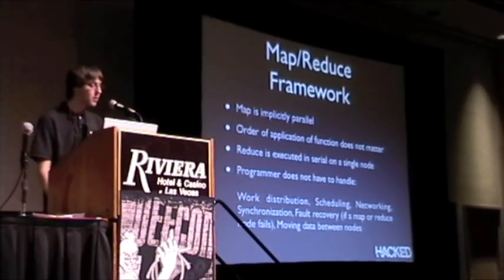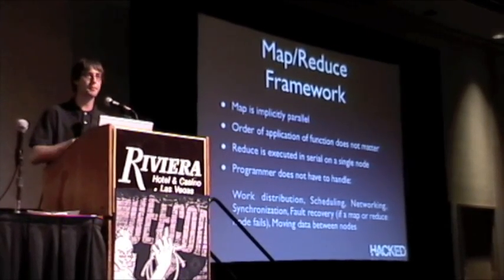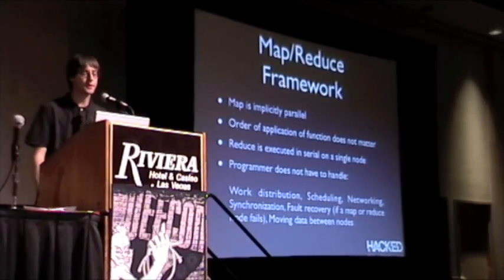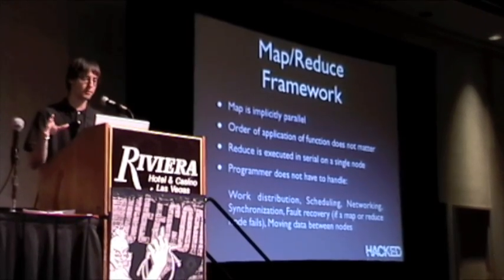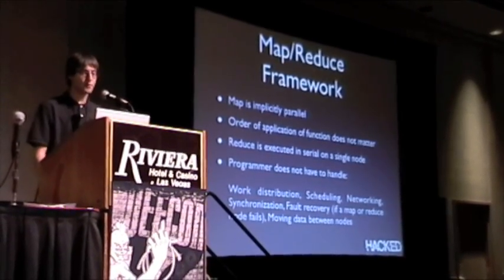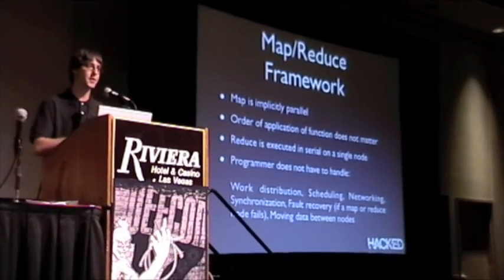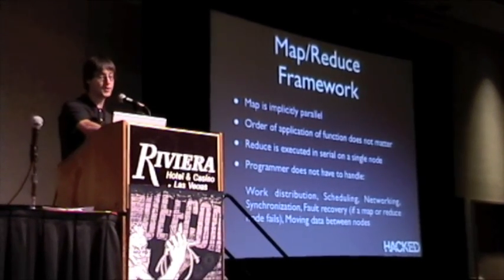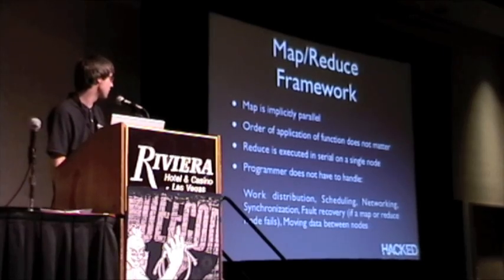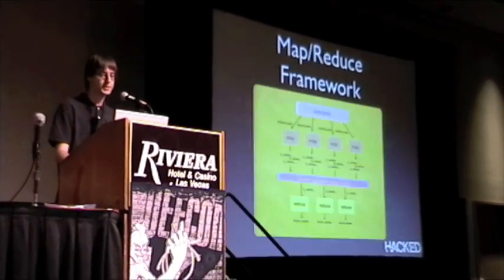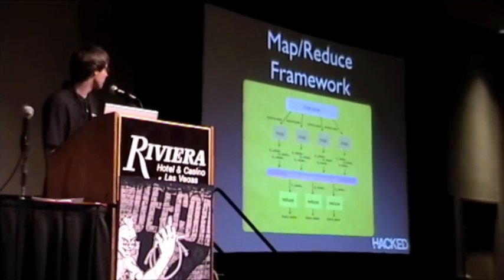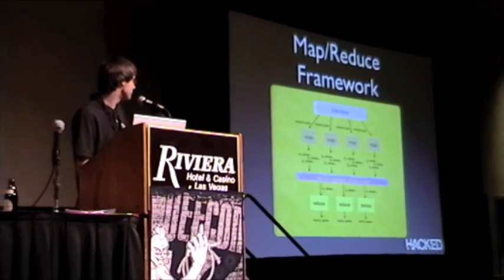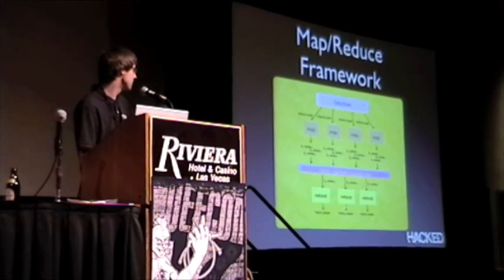The MapReduce framework allows you to take your whole input data set, break it up into pieces, run it all in parallel, then bring it back together for reduce. The order of application in the mapper doesn't matter because you're doing it in parallel. Reduce is executed in serial on a single node because you're computing across the entire data set, whereas map is just computing on pieces of it. Hadoop takes care of all that backend complexity so you don't have to worry about any of it. Here's a picture of the workflow: you start with your data source, break it up, run the map phase, then bring it all back together. Note that the picture shows three reducers, but in reality there is only one serial reducer.